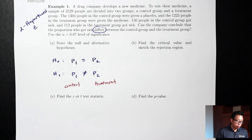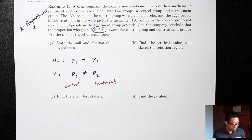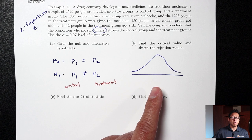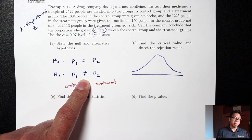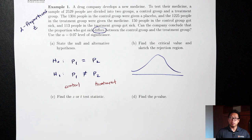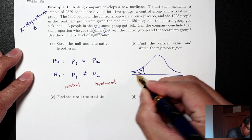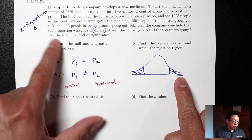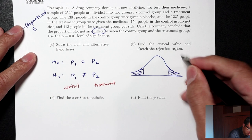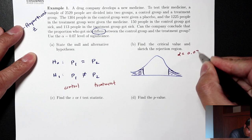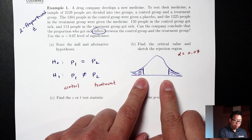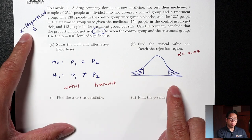Part B: Find a critical value and sketch the rejection region. The picture will be either the Z or T distribution, shaded left, right, or two tails. Not-equals means two tails. The shaded area equals alpha = 0.07. We're looking for Z-stars. This is an area-to-Z question, so we use qnorm with the left area. Since it's two tails, 0.07 is split across both tails — divide by 2 to get just the left area.